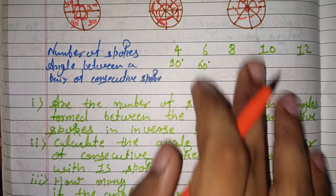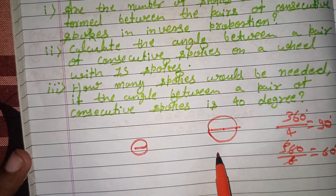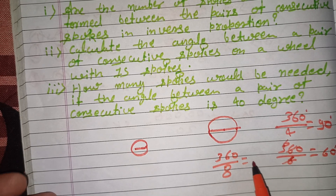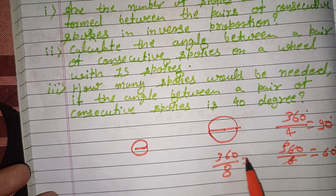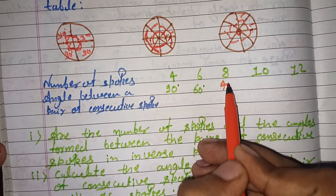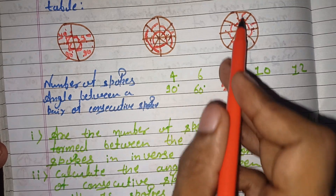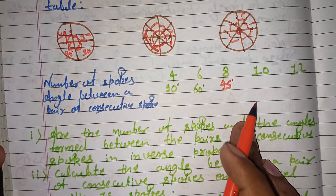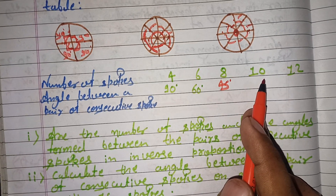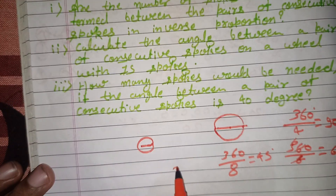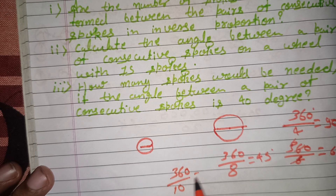So if we divide into 8 spokes, the angle will be 45 degrees. Then for 10 spokes, 360 divided by 10 spokes gives 36 degrees. That is very simple.